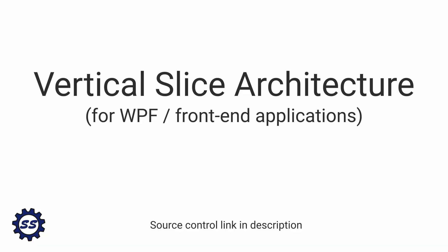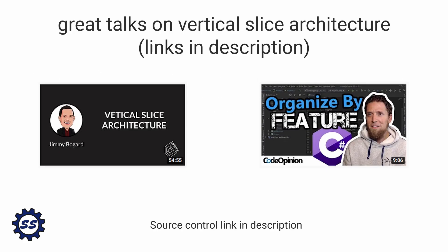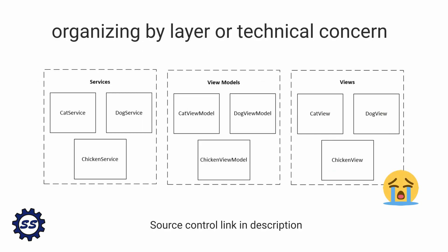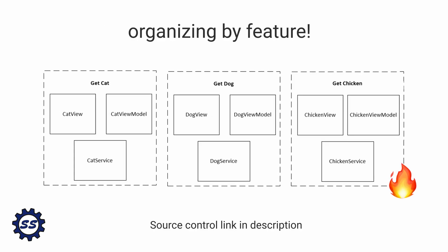Let's attempt to refactor a WPF application to use vertical slice, also known as feature slice architecture. There's always been a lot of talk in the .NET community about vertical slice architecture, and it exists outside the .NET world as well. Basically, the idea is rather than splitting your entire application into layers — database layer, UI layer, etc. — you split your application by features.